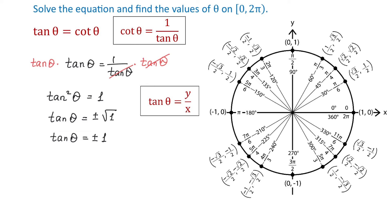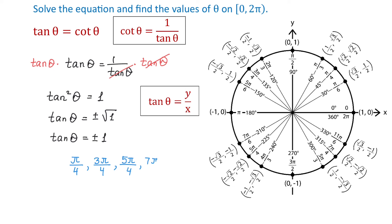These are the angles where both x and y have the same value or opposite values. At pi over 4, both x and y are the same, so the first solution is pi over 4. At 3 pi over 4, x and y have opposite values — dividing gives negative 1, so the next solution is 3 pi over 4. At 5 pi over 4, x and y are the same, giving 1, so the next solution is 5 pi over 4. At 7 pi over 4, x and y have opposite values, giving negative 1, so the last solution is 7 pi over 4.